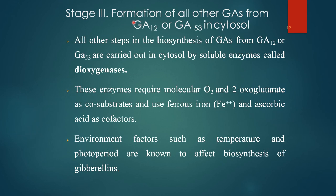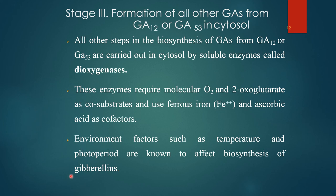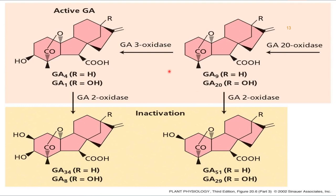The third stage involves formation of all other gibberellic acids from GA12 or GA53 in the cytosol. All other steps of biosynthesis from these two gibberellic acids are carried out in the cytosol by soluble enzymes called dioxygenases. These enzymes require molecular oxygen and 2-oxoglutarate as co-substrates and use ferrous ion and ascorbic acid as co-factors. Environmental factors such as temperature and photoperiod are known to affect the biosynthesis of Gibberellins, and in this way all other gibberellic acid forms are produced from GA12 or GA53.